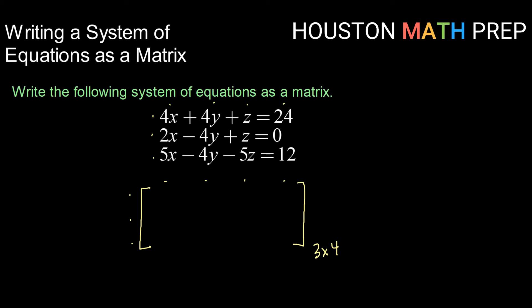Once organized, it's the same process — bring down your coefficients. From equation 1 that will be 4 for x, 4 for... when we only see z we know that's a 1, and the constant is 24. From equation 2: 2 for x, minus 4y gives negative 4 for y, 1 for z, and 0 for the constant. For equation 3: 5, negative 4, negative 5, and 12. So this three by four matrix represents this system of three equations with three unknowns.